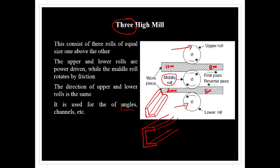In the 3-high rolling mill, there is a first pass and a second pass. The first pass goes in the left-to-right direction between the bottom rollers, and the second pass goes in the right-to-left direction using the middle and top rollers.